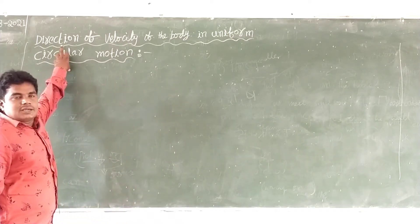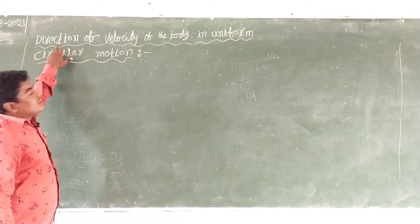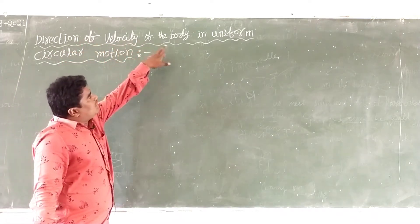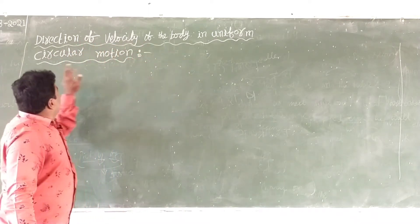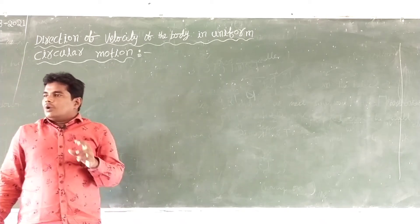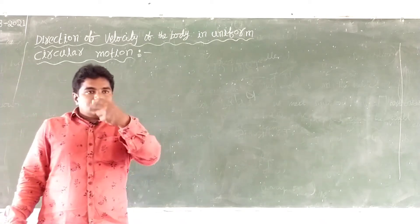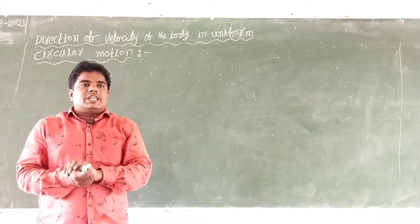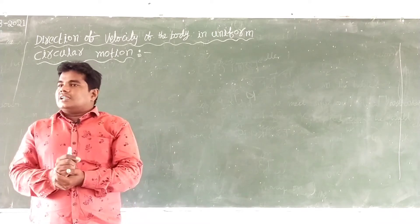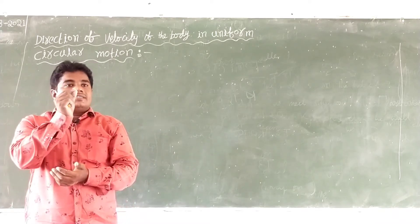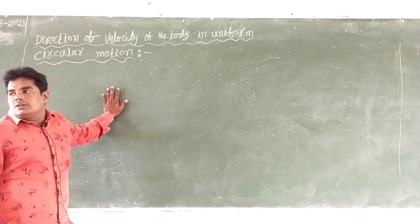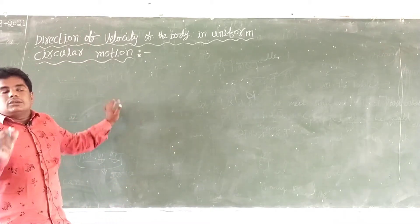Today we are going to discuss the direction of velocity of a body in uniform circular motion. A body is revolved in a circular path — what is the direction of velocity? This is the direction of velocity which we have discussed in this class.